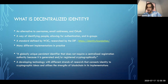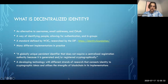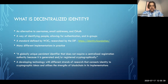Decentralized identity is a new experimental standard defined by W3C and actively researched by the Identity Foundation (DIF). In practice there are a number of different implementations where people are working out the best approaches. The W3C spec defines it as a globally unique persistent identifier that does not require a centralized registration authority because it is generated and/or registered cryptographically.